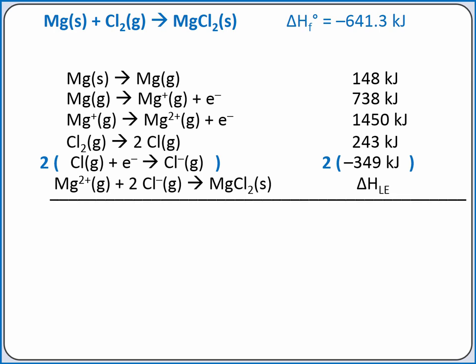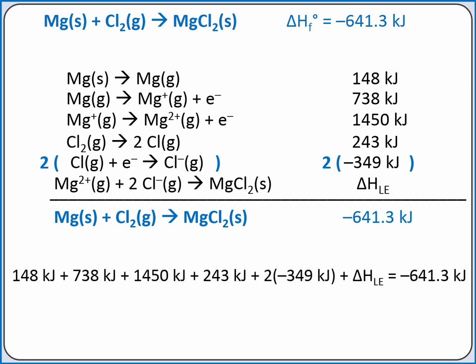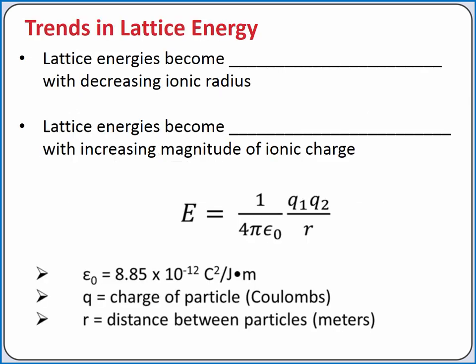If we add all of these equations together, we should get our overall reaction for the standard enthalpy of formation of magnesium chloride. According to Hess's law, the sum of the enthalpy changes for the steps equals the overall enthalpy change of the reaction. Plugging in our numbers for each step, we can solve for the lattice energy. Completing the calculation, we should get negative 2,522 kilojoules.